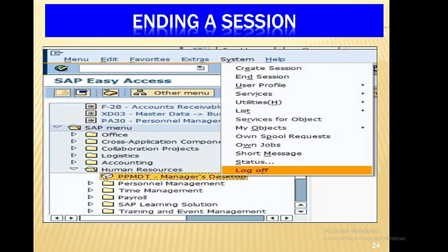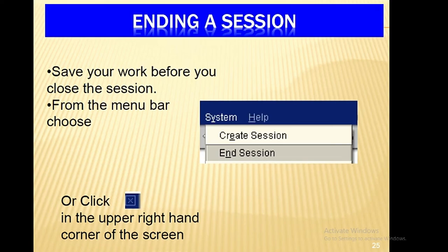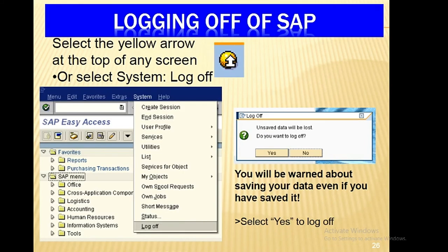To end a session, save your work before closing. From the Menu Bar, choose the option or click in the upper right-hand corner of the screen. To log off of SAP, select the Yellow Arrow at the top of any screen, or select System > Log Off. You will be warned about saving your data even if you have already saved it. Select Yes to log off.